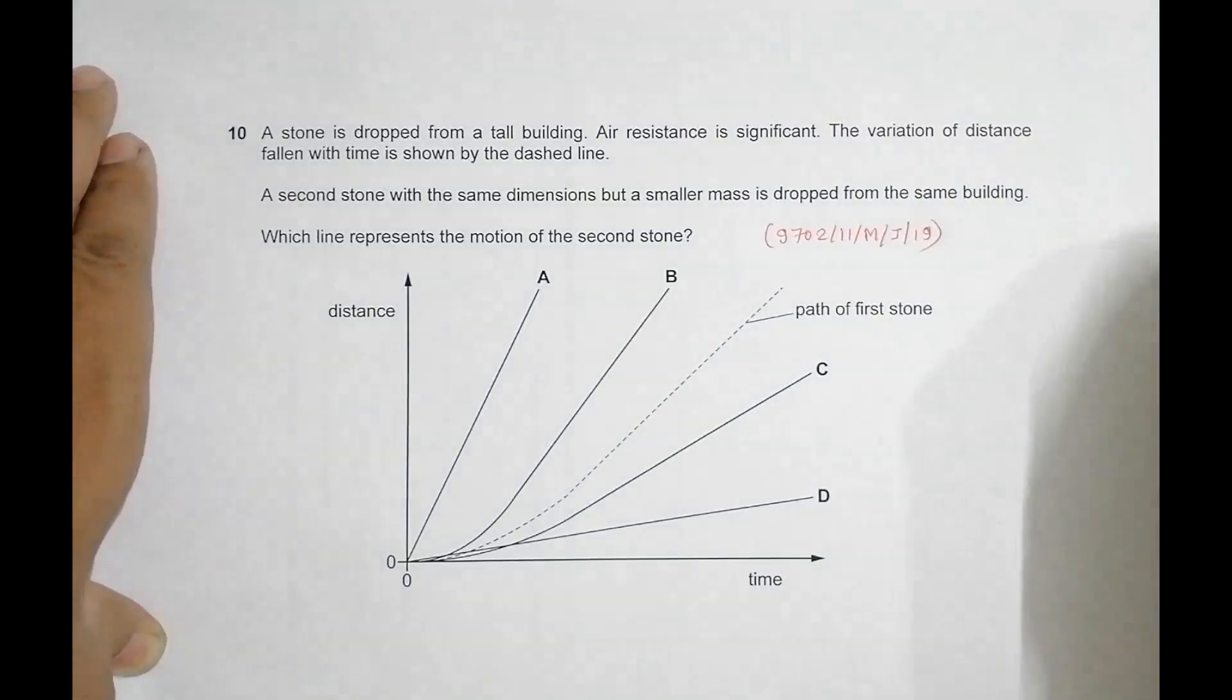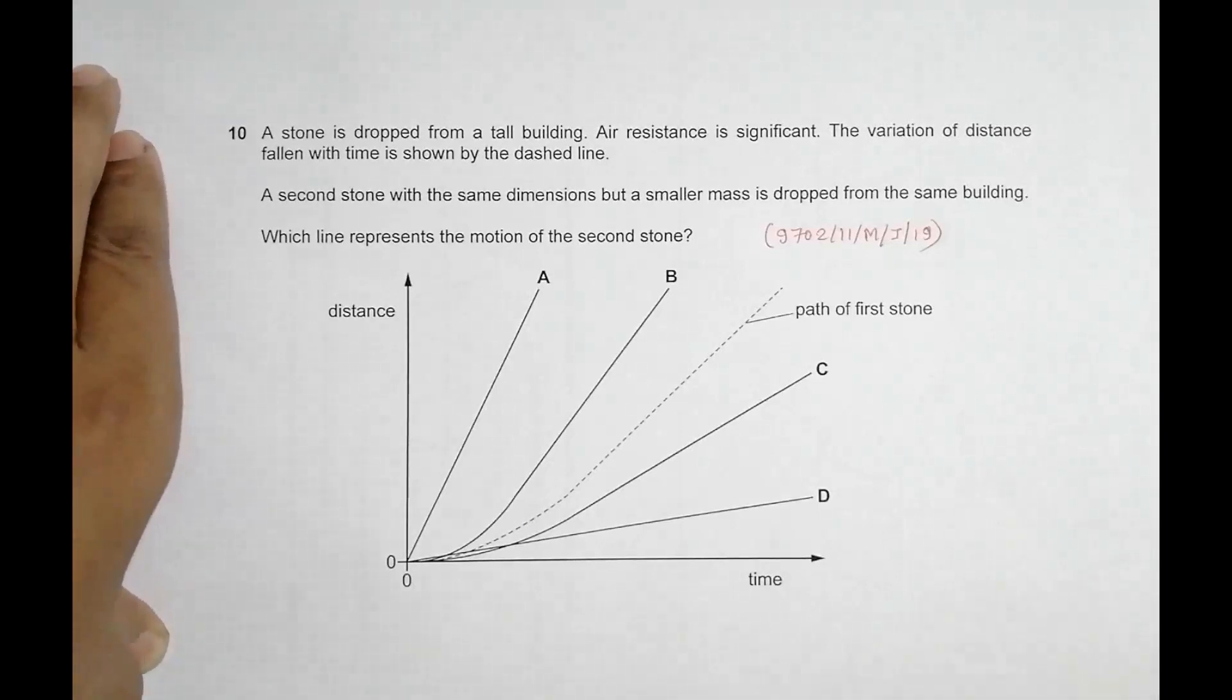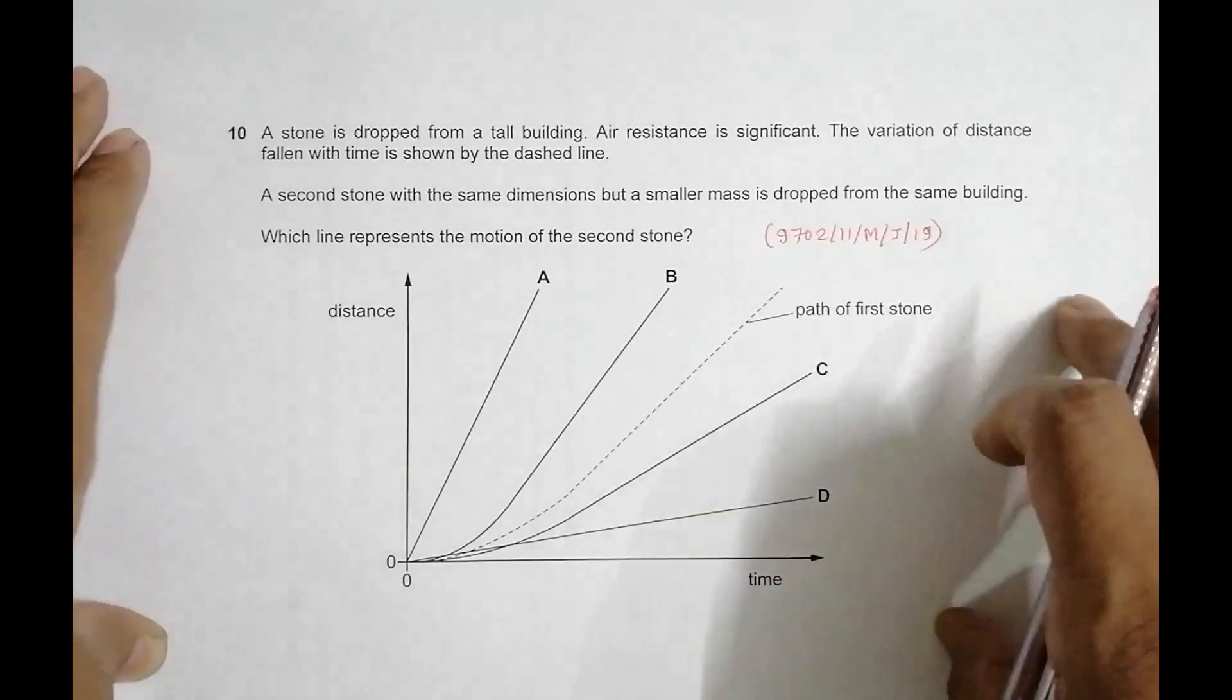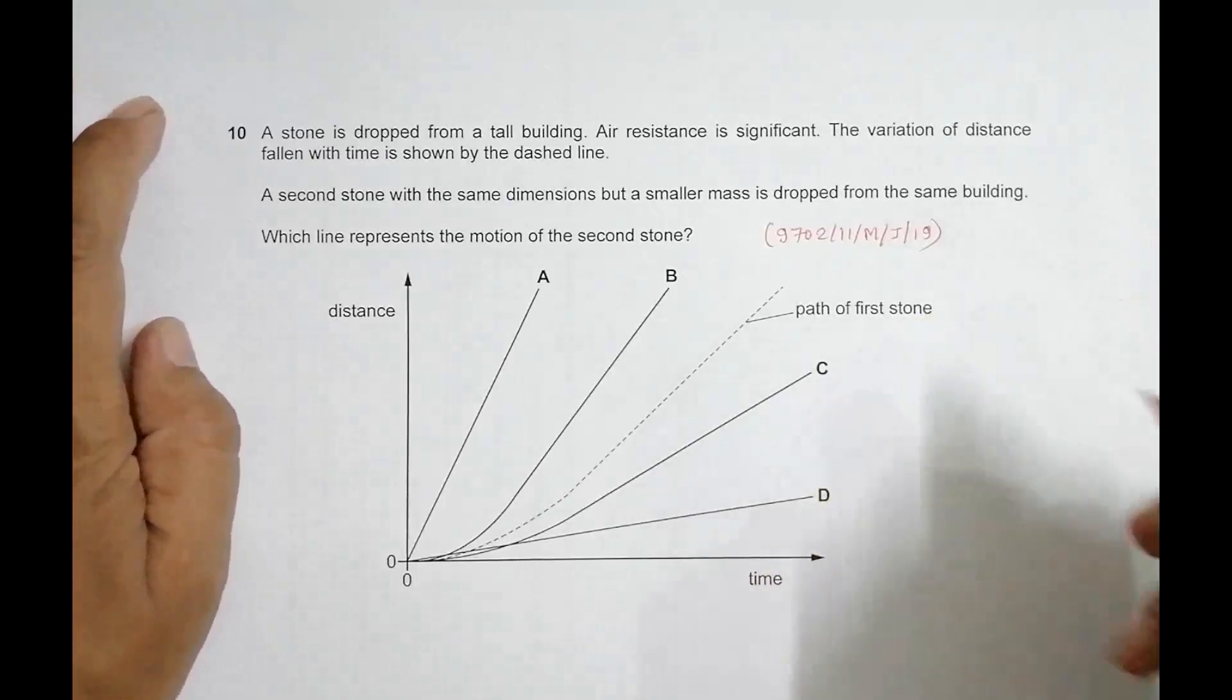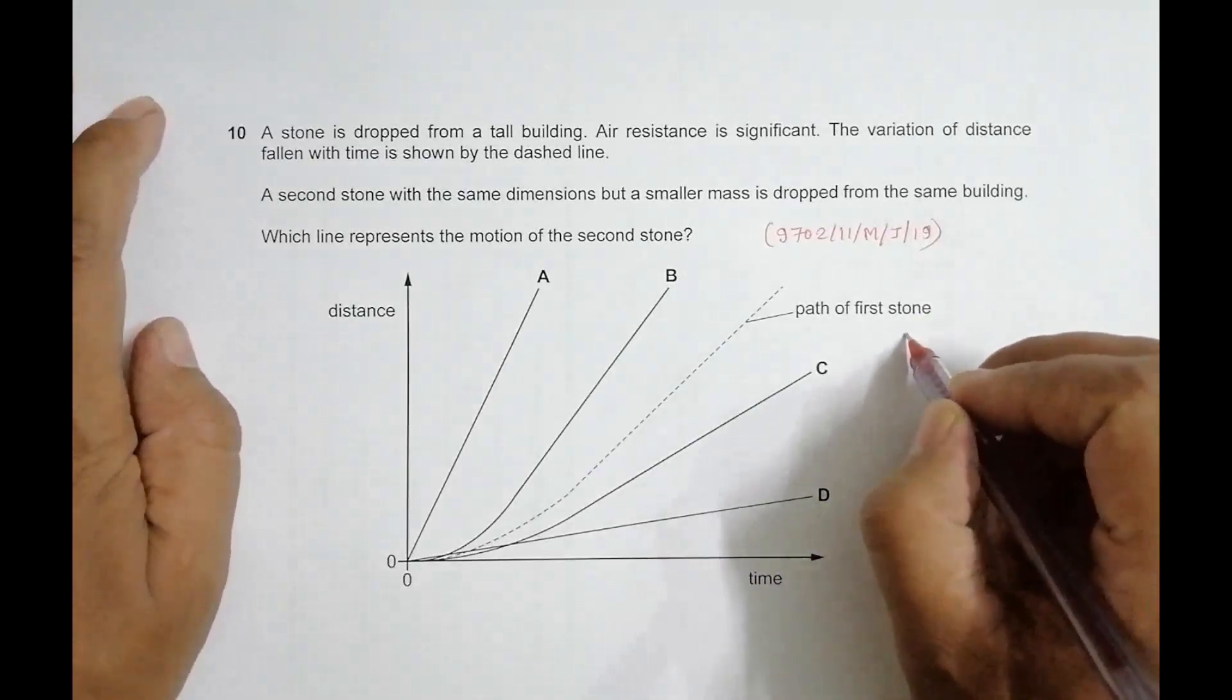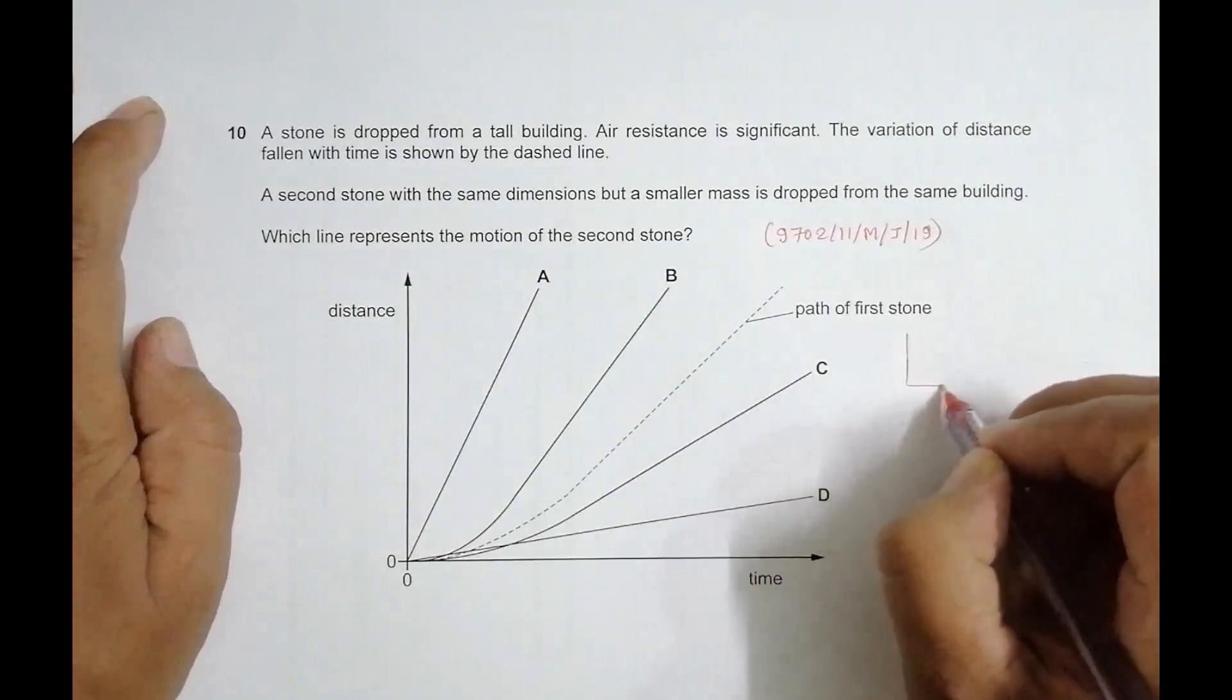One thing we have to remember here is when a body is dropped through air or through a dense medium, the variation of displacement or distance will be somewhat like this. First let us go to the velocity.